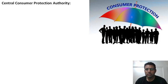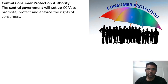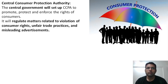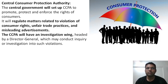The Central Consumer Protection Authority (CCPA), which is to be formulated under the 2019 act, will be set up by the central government to promote, protect, and enforce the rights of consumers. It will regulate matters relating to violations of consumer rights, unfair trade practices, and misleading advertisements. The CCPA will have an investigation wing headed by a Director General, who will carry out all inquiries and investigations. This reduces the workload on police, as there is a separate wing for investigation.